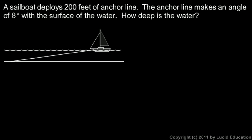We're told that the anchor line makes an angle of 8 degrees with the surface of the water. So even though there are waves on the surface, we're going to assume that the surface of the water is basically flat and parallel to the seafloor. This angle, the angle with the surface and the anchor line, is 8 degrees. And we want to know how deep the water is.